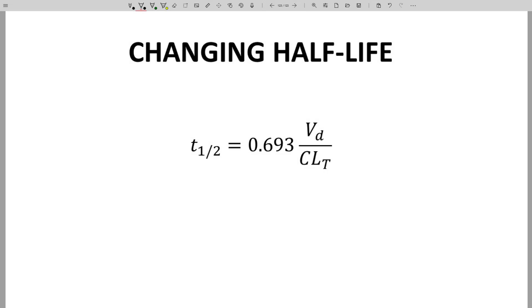Let's quickly think about the implications of having different Vd values. Remember that half-life is determined by both Vd and clearance. If Vd is not constant, the half-life is not constant. This idea shocked me the first time I learned it.